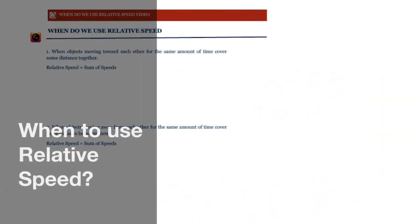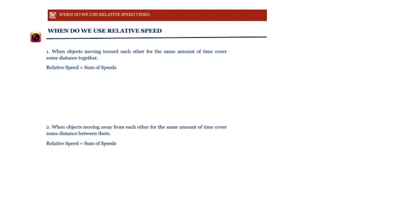Sometimes learners struggle with the question: when do we use relative speed? They do know how to use it — for example, if two objects are moving in opposite directions, the speed is the sum of their speeds, or when moving in the same direction, the relative speed is the difference. But the point is: in which cases do we actually use the concept? We'll have a quick discussion on that today.